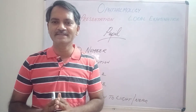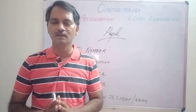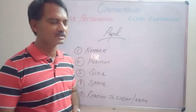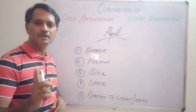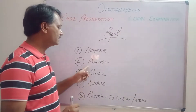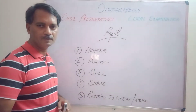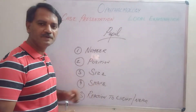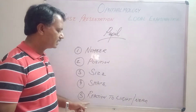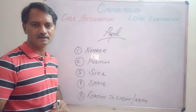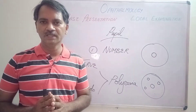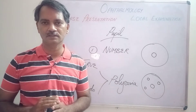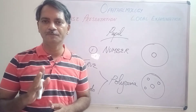Coming to the examination of the pupil, it has to be done under five headings: one is the number of pupils, second is position of the pupil, third is size of the pupil, fourth is shape of the pupil, and fifth is reaction to light and near. The first thing we examine is how many openings are there in the iris, or how many pupils are present.